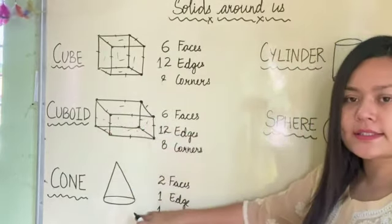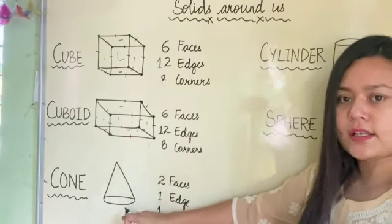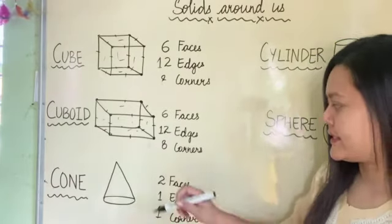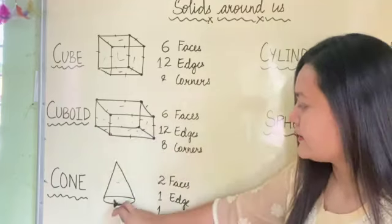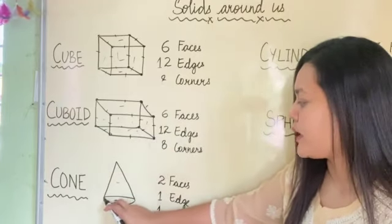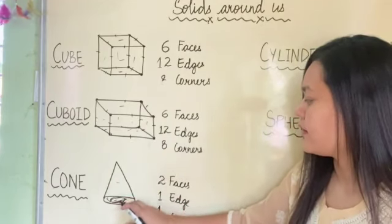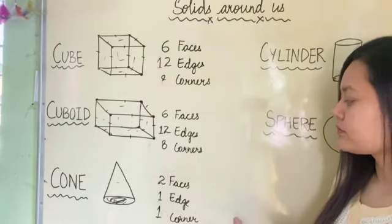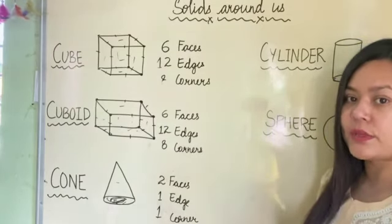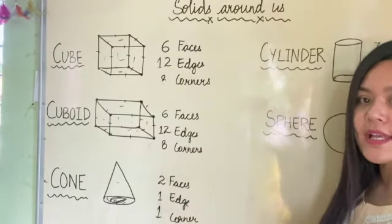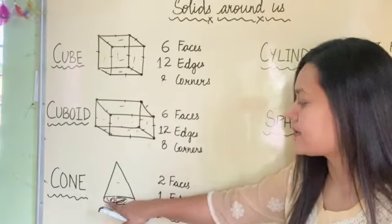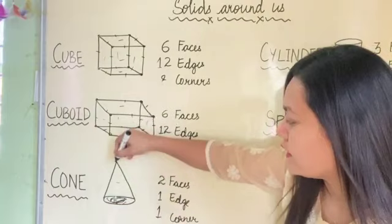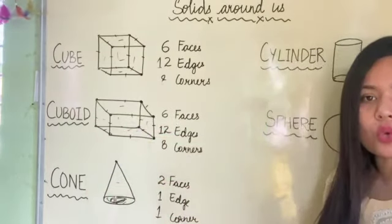Now let's come to the next solid shape, that is a cone. This is a cone. A cone has how many faces? Two faces - this one and the bottom one. And how many edges? It has only one edge. And how many corners? Only one corner. This is cone.